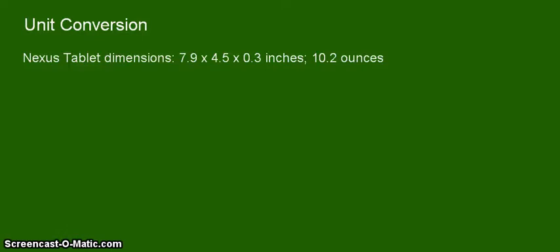Hello and we are back with another video on unit conversions. For this example we are trying to convert the dimensions of a famous Nexus tablet which is 7.9 by 4.5 by 0.3 inches and its weight which is 10.2 ounces. We will try to convert that into kilograms and then the dimensions into centimeters.